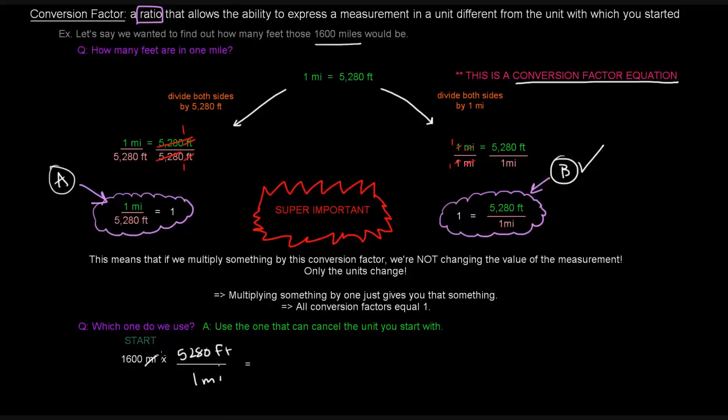I'm going to put 5,280 feet on the top and one mile on the bottom. The miles will cancel. Now I just multiply 1600 by 5,280 and divide by one. I end up getting 8,448,000 feet. Because the miles canceled, all that's left is the feet unit.